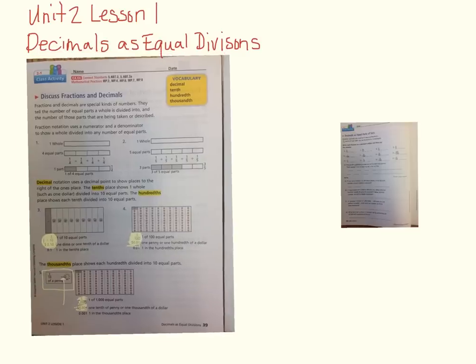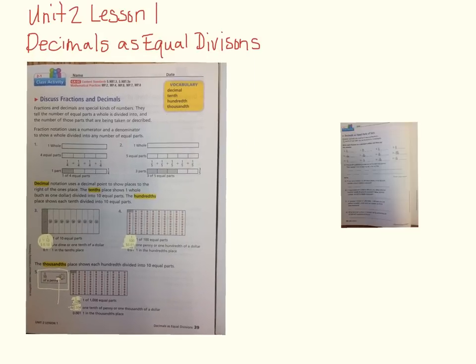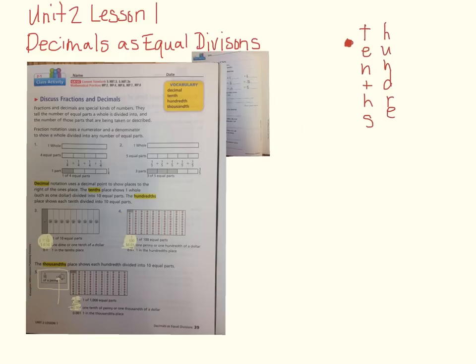You have your decimal point, then you have your tenths, you have your hundredths, and then you have your thousandths.